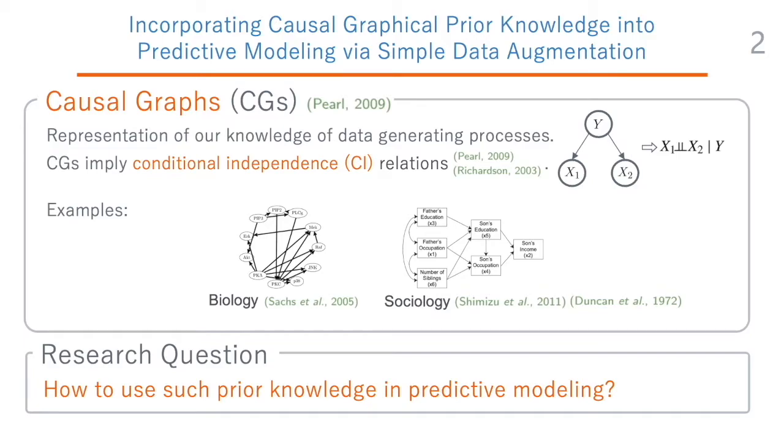To explain the problem setup, we need to first introduce the notion of causal graphs. Causal graphs are compact representations of the knowledge of the data generating processes behind the data distributions. They encode the cause-effect relations among the variables, where a directed edge is drawn from variable A to B if A is the direct cause of B. Based on this semantic understanding, a causal graph may be obtained from the domain knowledge by encoding the data generating process.